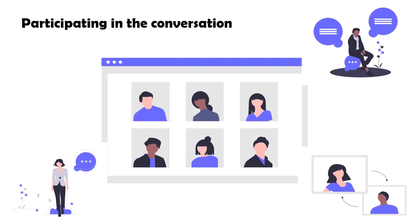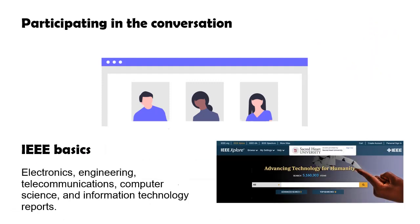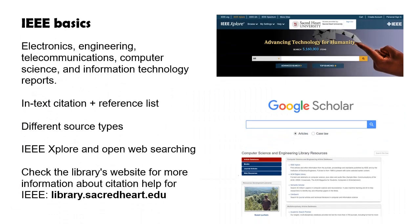You should now have a better understanding of why we cite in academic work. Now it's time to dive into the details of citation styles. IEEE is primarily used in the fields of electronics, engineering, telecommunications, computer science, and information technology reports.